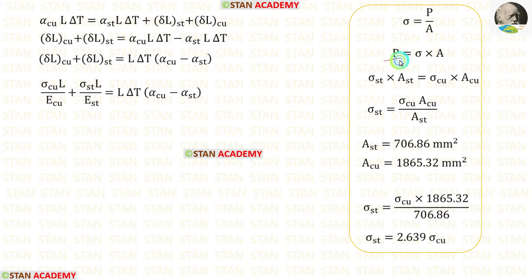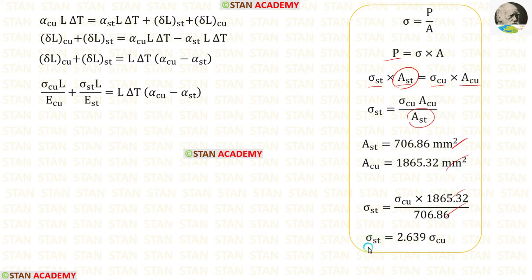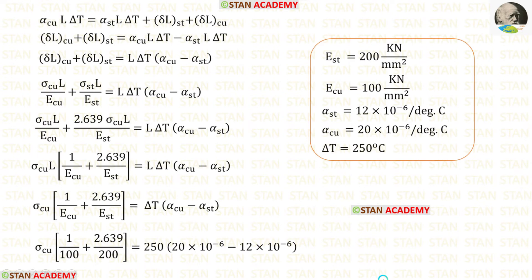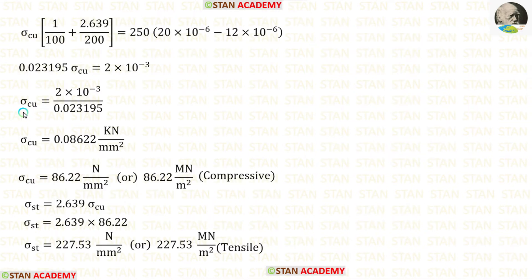The load P will be the same in both materials, so we can write σ_ST × A_ST equals σ_Cu × A_Cu. Taking A_ST to the right side gives us the ratio of stresses. Applying the known values of A_ST and A_Cu, we finally get σ_ST equals 2.639 × σ_Cu. Substituting this back and cancelling L, then applying the Young's modulus values, alpha values, and delta T, we solve for σ_Cu.